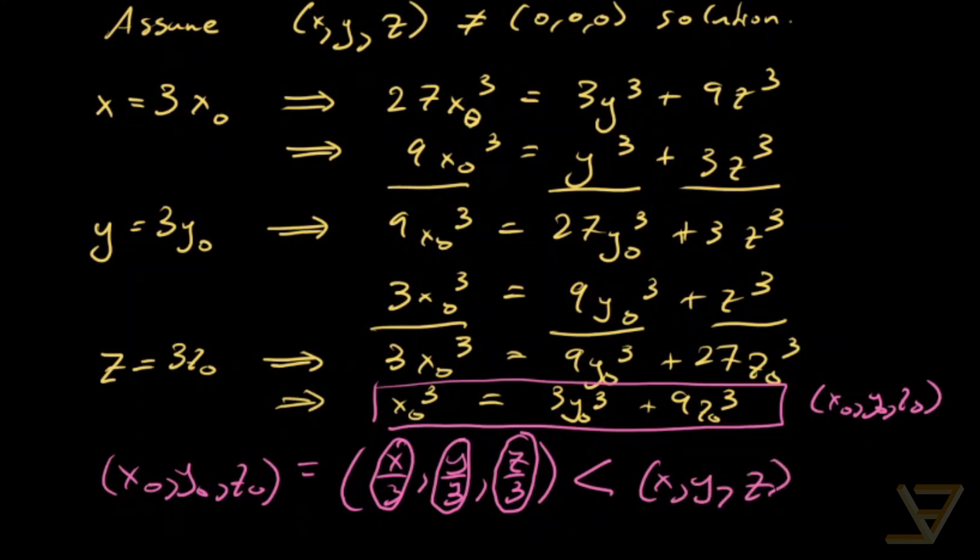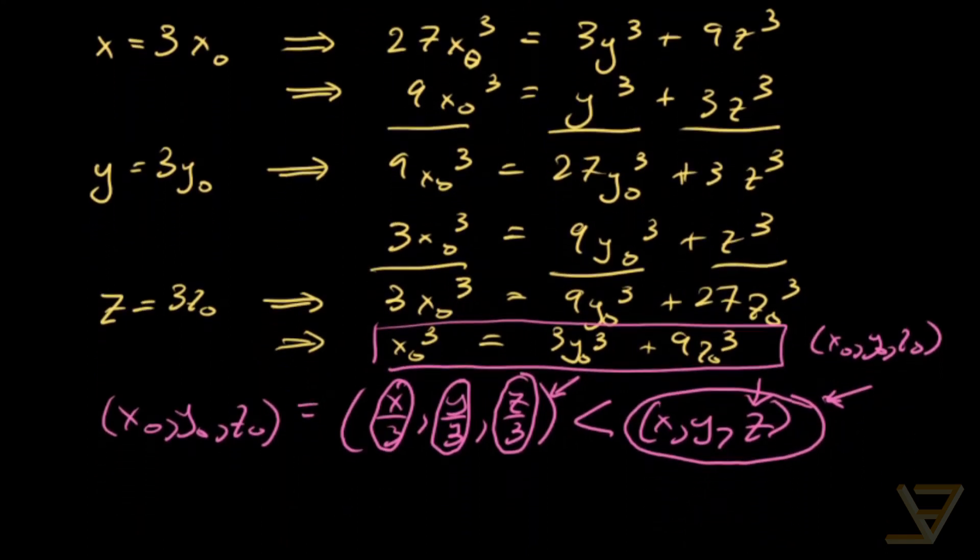You can formalize this by choosing one of the variables. And so that means that there is some solution that is smaller than the original minimal solution. And this is not all zeros either, because then this would be all zeros. So that's the contradiction that we wanted.